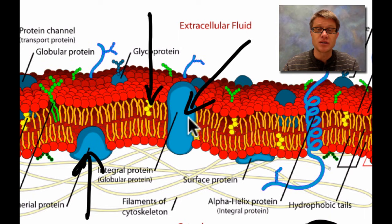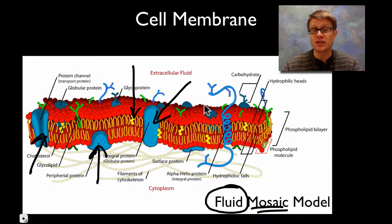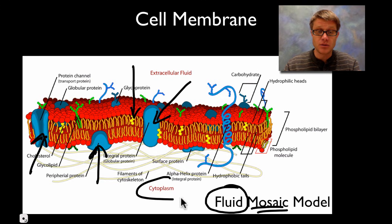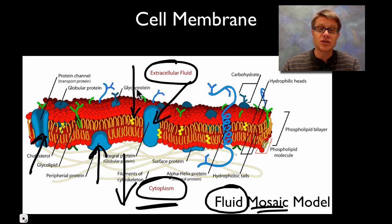The function of the proteins is that they actually give the membrane its specific characteristics — they allow material in and connect to material outside. To get your head around this: the cytoplasm is going to be down here, this would be the cytoplasm, and this is the cytoskeleton attached to it. And then the extracellular fluid is going to be on the outside.